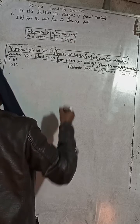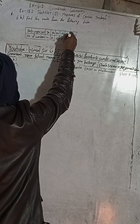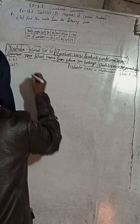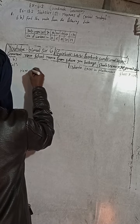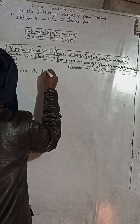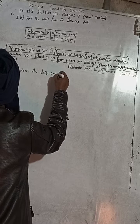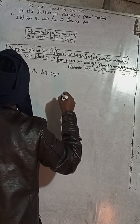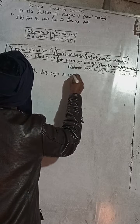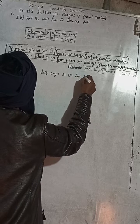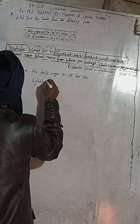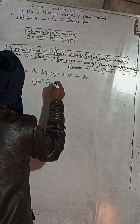So the corresponding data is 150. That means the daily wages 150 has the highest frequency. Can write here, here the daily wages, the daily wages Rs 150 has the highest frequency.